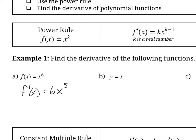Next, y equals x. Using the notation y prime, let's think about this with the power rule. The exponent on x is a tiny 1 that you don't see. So we bring that 1 down in front, giving us 1x, and then subtract 1 from the exponent to get x to the power of 0. Since x to the power of 0 is just 1, y prime equals 1.